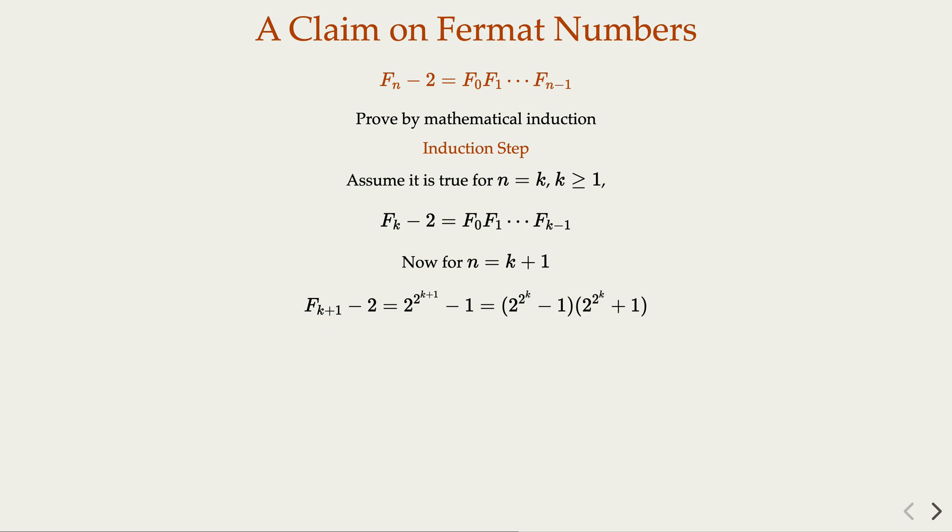Notice that here, the two factors, the first one is nothing but Fk minus 2. So let's replace that. And the second factor is Fk. But by the induction assumption, that in the market highlighted here is going to be F0, F1, up to Fk minus 1. Let's plug in, we have this.